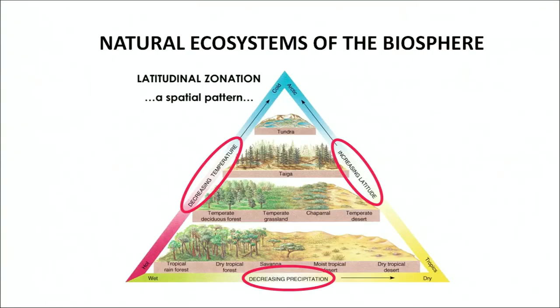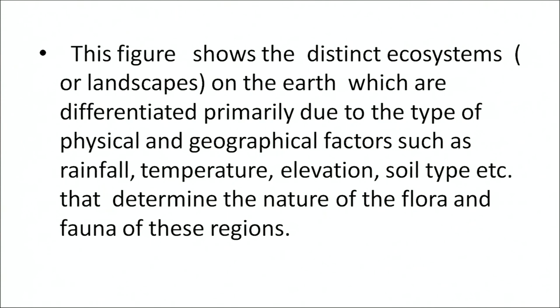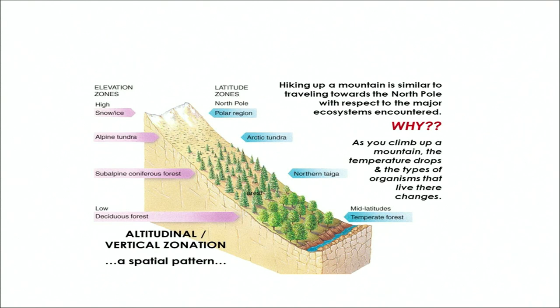In this figure, you can see the latitudinal and altitudinal variations dependent upon the physiography of the place, with respect to climatic changes, temperature, soil and other factors. The various landscapes on the earth are differentiated primarily due to the type of physical and geographical factors such as rainfall, temperature, elevation, and soil type, which determine the nature of the fauna and flora of these regions. This is another figure to familiarize you with the latitudinal and altitudinal similarity in the variation of plants at different latitudes and altitudes.